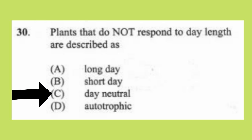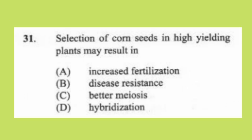Question 30: Plants that do not respond to day length are described as (a) long day, (b) short day, (c) day neutral, (d) autotrophic. The answer is C, day neutral. Long-day plants blossom when the day is longer; short-day plants flower when the day is shorter.